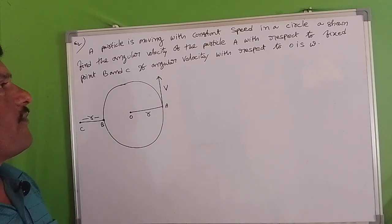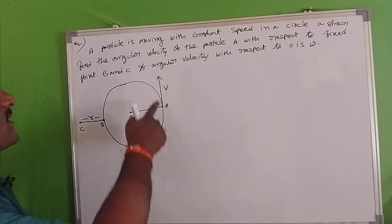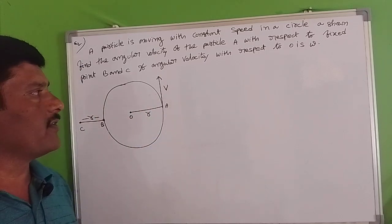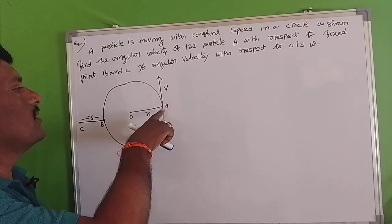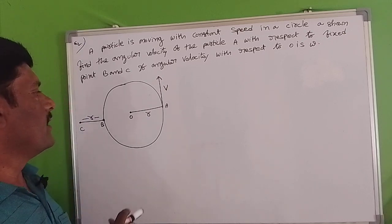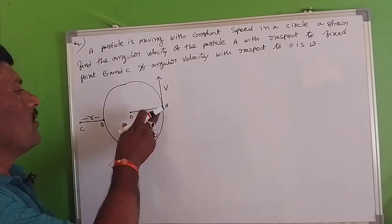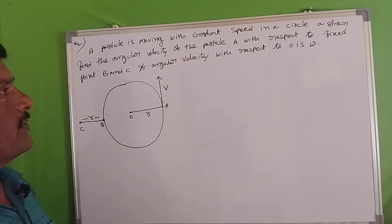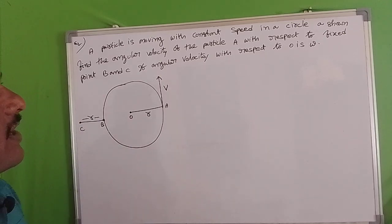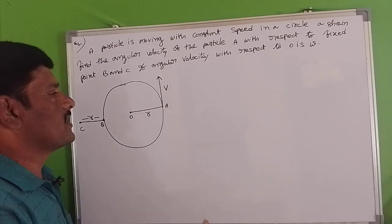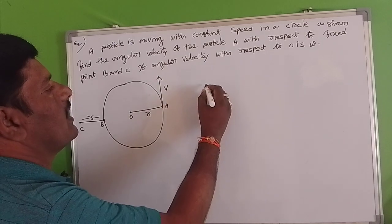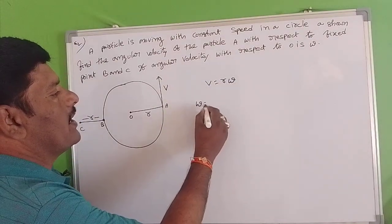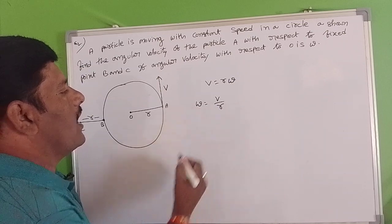We will find out the angular velocity of the circular path. The particle has linear velocity V and it moves at point A. The distance between O and A — nothing but the radius of the circle — is known as R. We know the relation V equals R times omega, so omega can be written as V by R.